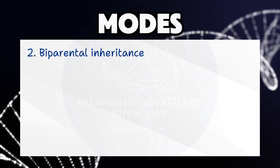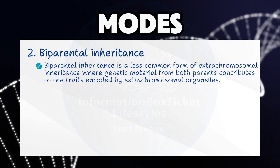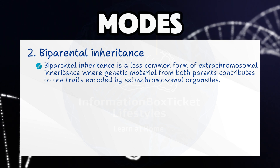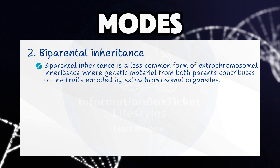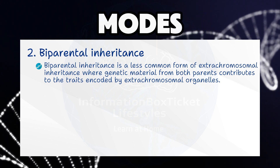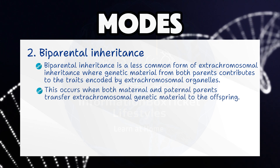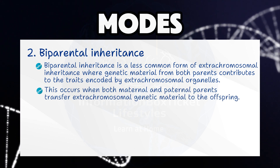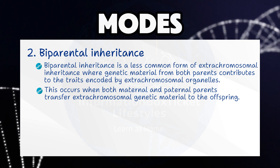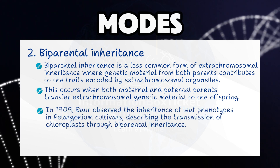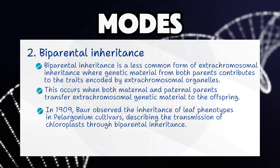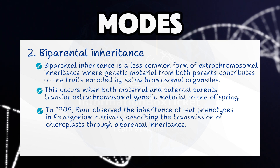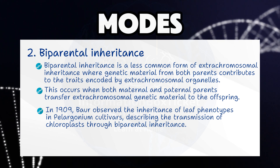Mode 2: Biparental Inheritance. Biparental inheritance is a less common form of extra-chromosomal inheritance where genetic material from both parents contributes to the traits encoded by extra-chromosomal organelles. This occurs when both maternal and paternal parents transfer extra-chromosomal genetic material to the offspring. In 1909, Bauer observed the inheritance of leaf phenotypes in Pelargonium cultivars, describing the transmission of chloroplasts through biparental inheritance.